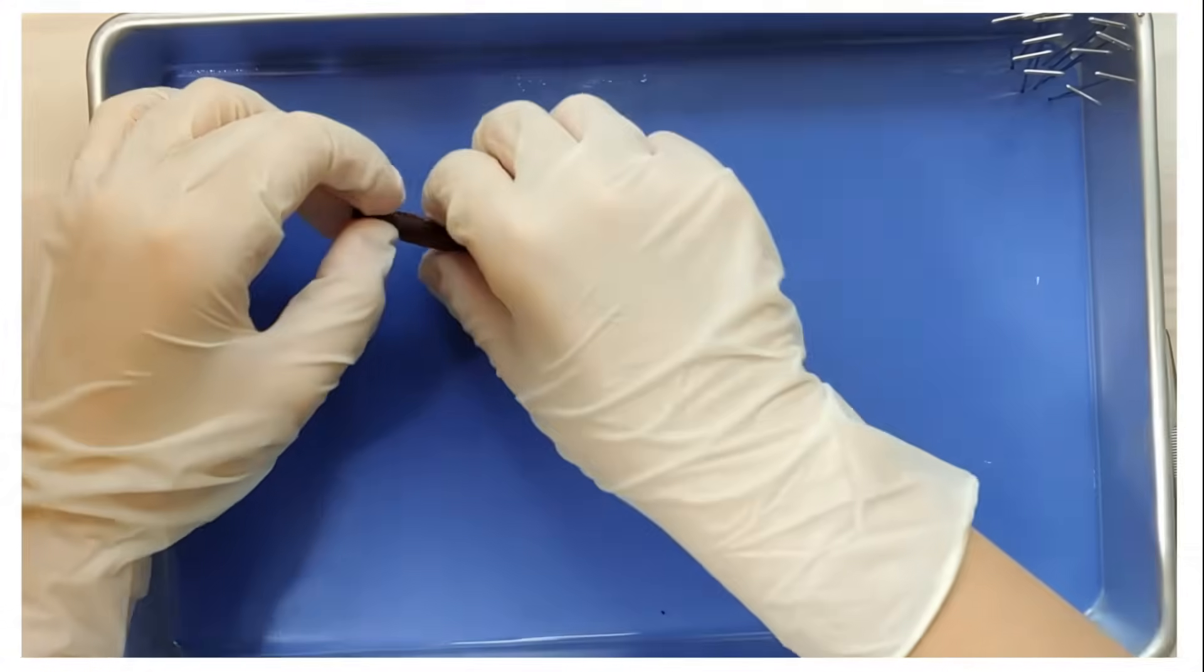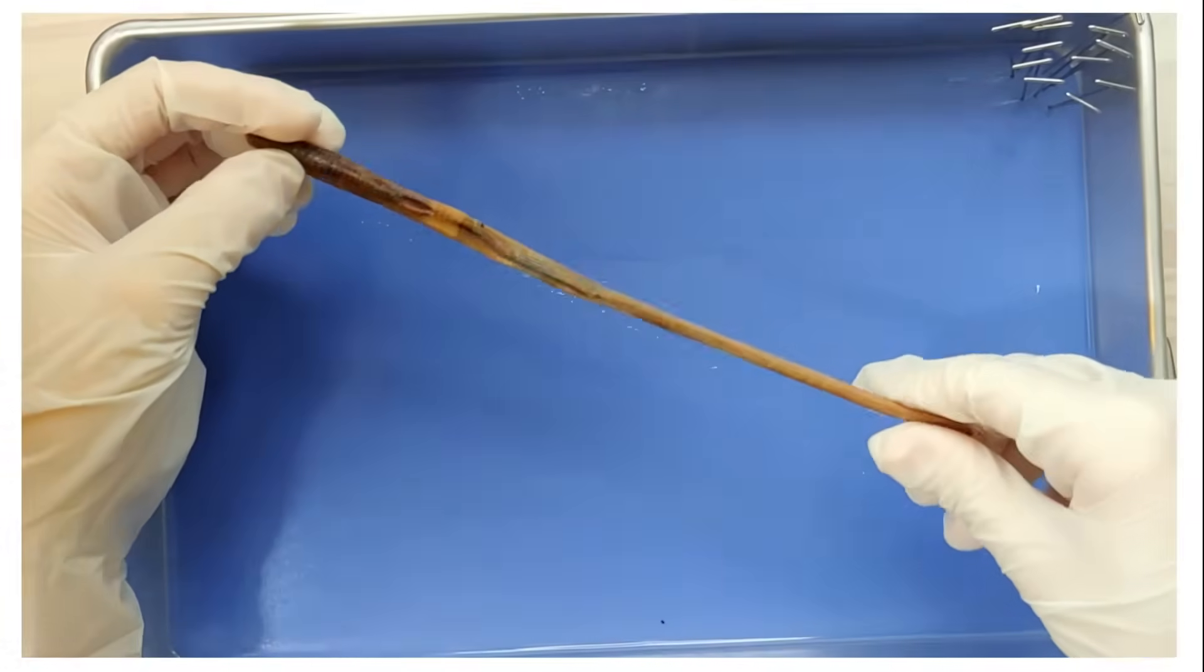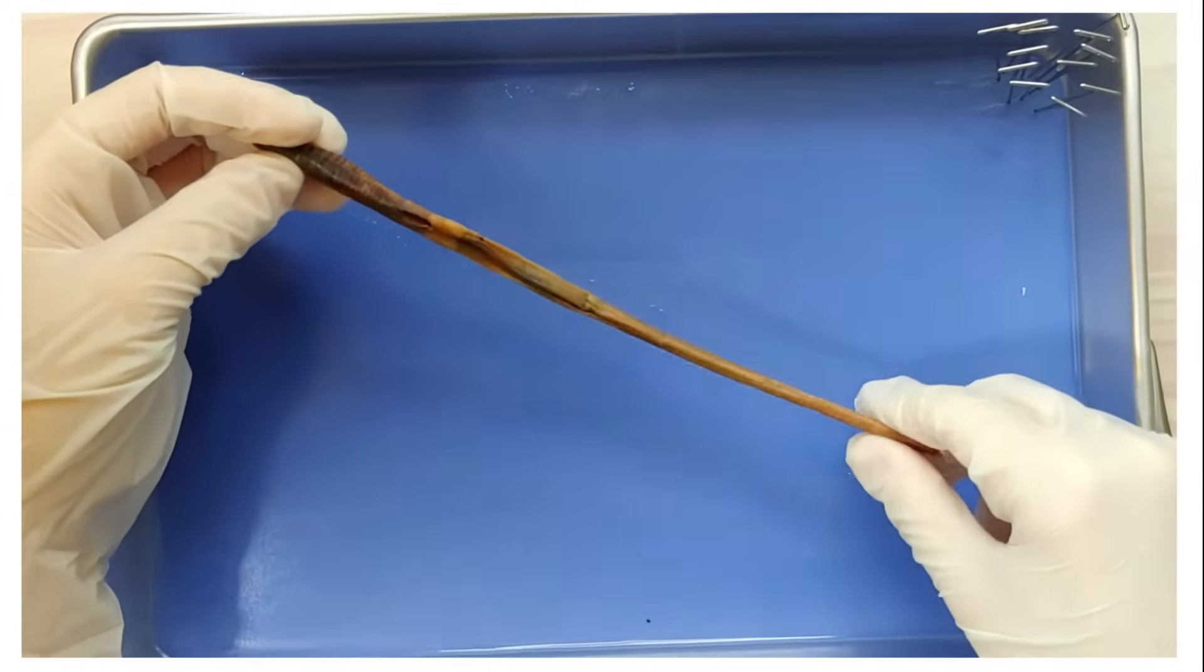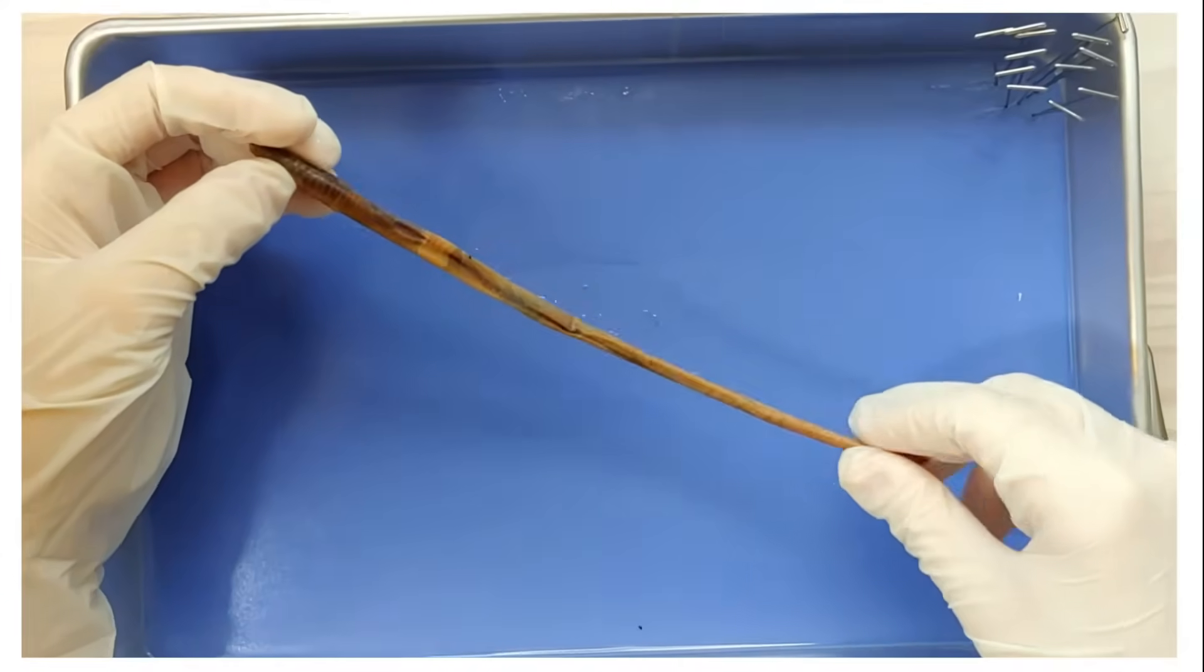So this is the ventral side or the stomach and that is the dorsal side or the back. You can see that the dorsal side is darker than the ventral side.